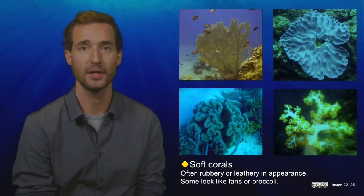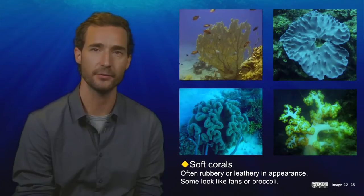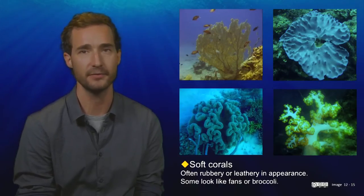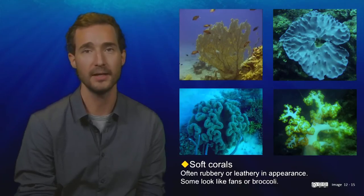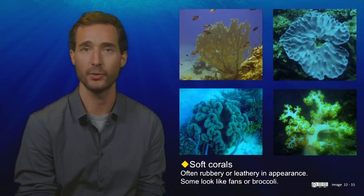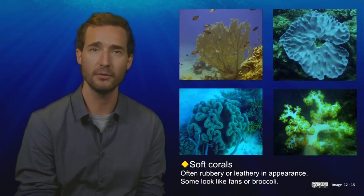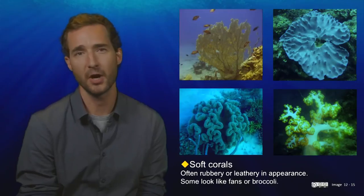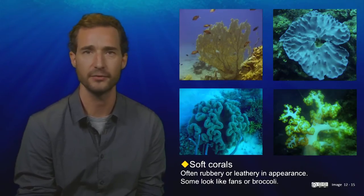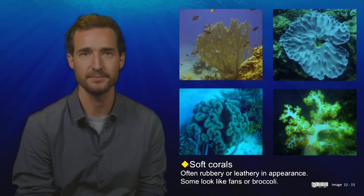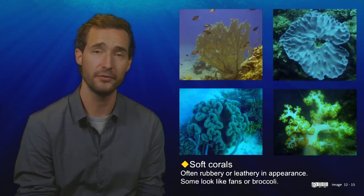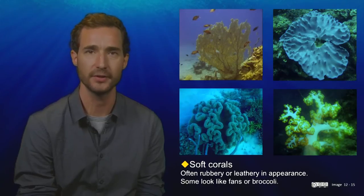Now we move on to the soft corals. Earlier I mentioned that the hard corals have six tentacles and belong to the group Hexacorallia. Well, as you learned in week one, the soft corals all have eight tentacles, and so they're called Octocorallia. Again, there are many species of soft corals, and they are extremely difficult to tell apart. But for your final project, you will only have to identify them as being soft corals. With a little practice, soft corals are quite easy to distinguish from hard corals, and they often have a leathery or rubbery appearance. Some of them look like old-fashioned fans or even broccoli or feathers. If you compare the image at the top right here with the image of the encrusting hard coral shown on the previous slide, it will help you to train your eye to tell the difference between the two groups.